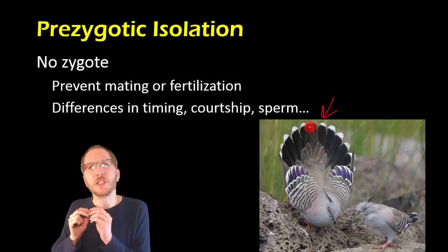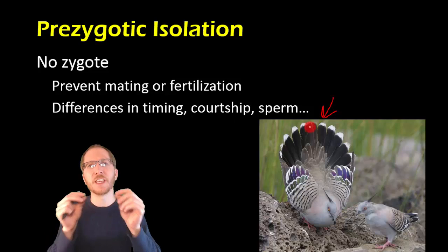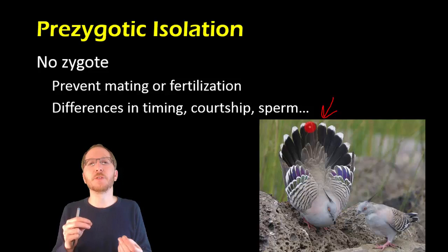And it essentially dumps a bunch of these enzymes that digest this coat called a jelly coat that surrounds the actual ovum or egg. And so if you lack the right enzyme, you're not able to break down that coating, which means the sperm can't actually get into the egg to impregnate it.